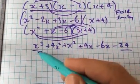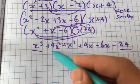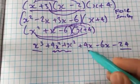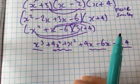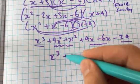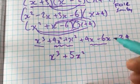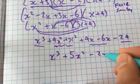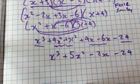So one cubic, one constant, two quadratic, and two linear. And that would then reduce to x cubed plus 5x squared minus 2x minus 24.